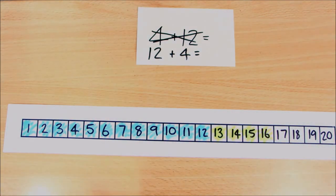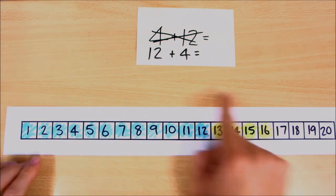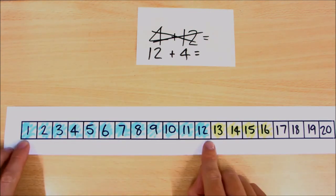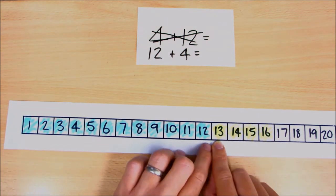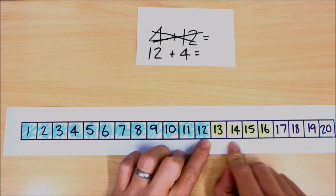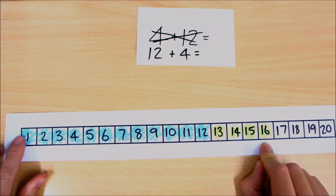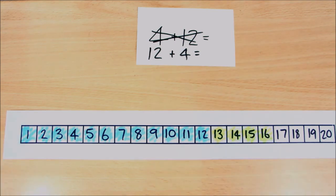So like I said with the last one, we don't actually need to count how many there are all together because we know that we've colored in from one all the way up to twelve, and then we've not missed any and we've colored from twelve up to sixteen. So one to sixteen, twelve add four is sixteen.